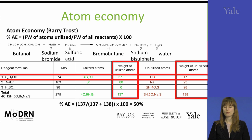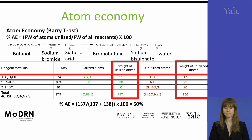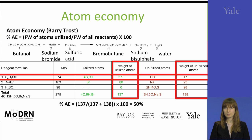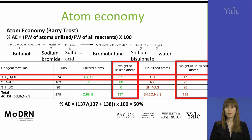A similar calculation is performed for unutilized atoms. For butanol, only hydrogen and oxygen remain unutilized. Again, we calculate the weight of unutilized atoms. Having the weight of both utilized and unutilized atoms, we add them to a total. The total weight of utilized atoms comes to 137, and the total weight of unutilized atoms comes to 138. To calculate the atom economy, you divide 137 by 137 plus 138, multiplied by 100.